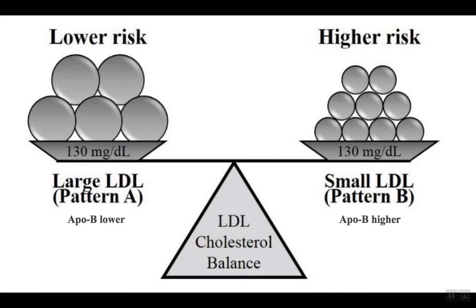Both of these patients have LDL cholesterol of 130. When you do advanced lipid testing, they call a predominantly large LDL pattern 'Pattern A' and a predominantly small LDL cholesterol pattern 'Pattern B.' Pattern A, with larger LDL, is a lower risk. The small LDL Pattern B has a higher risk. Just looking at LDL-C is not really drilling down accurately to the patient's metabolic risk.